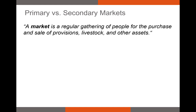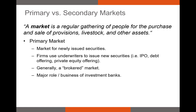Markets can take many forms. Direct search markets, where buyers and sellers seek each other out. Brokered markets, where brokers buy and sell securities on behalf of their clients. Dealer markets, where dealers maintain inventories of assets from which they buy and sell. And auction markets, where traders converge at one place to trade.